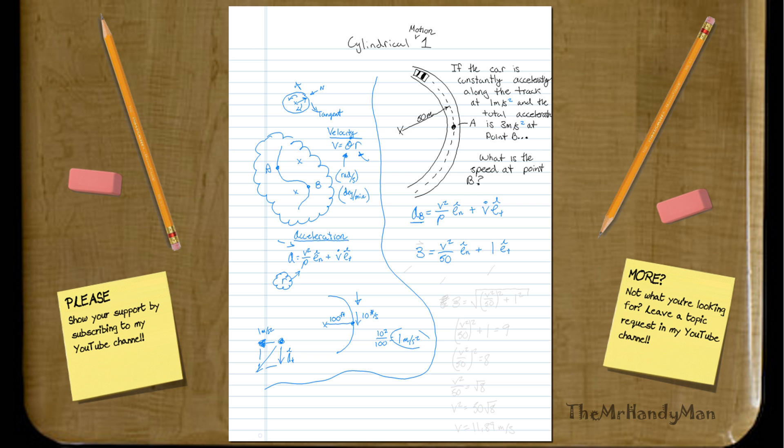Now what we can do is we can realize that this is normal, and that we will just backtrack this and do the Pythagorean theorem. Realize that these are all vectors: vector, vector, and vector, and I know this doesn't seem like a vector, but it is, like the total acceleration, that is a vector. So, what we have is, when we do the Pythagorean theorem, we'll have 3 equals,